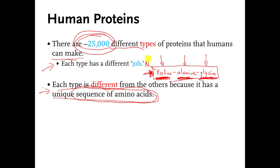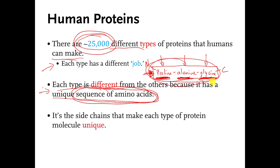Usually you would put a little N and a little C there, from a previous video. Sequence of amino acids means the kind of amino acids and the order that you connected them in. The only thing that's really different about those amino acids is the side chains — all the other parts of the amino acid molecules are identical. It's basically the order that you connect the side chains to each other in that makes different protein molecules have different jobs.